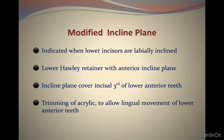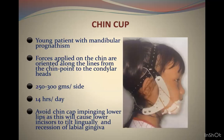The modified inclined plane is indicated where lower teeth are labially inclined (protruded). A lower Hawley retainer with an anterior inclined plane is used; the inclined plane covers the inside third of lower anterior teeth, and acrylic trimming allows lingual movement of the lower teeth. This shifts to the normal inclined plane effect once lower inclination is corrected, protruding upper teeth and increasing the occlusal plane angle. It works only on incisors and has no effect on the jaws.